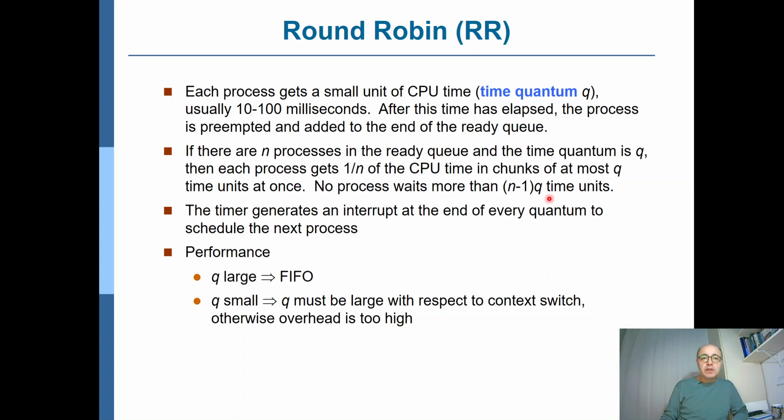The performance of round-robin scheduling becomes equivalent to the performance of FIFO or FCFS if q is extremely large, because when q is very large, it appears like there's no time quantum—you just get the CPU until you complete.